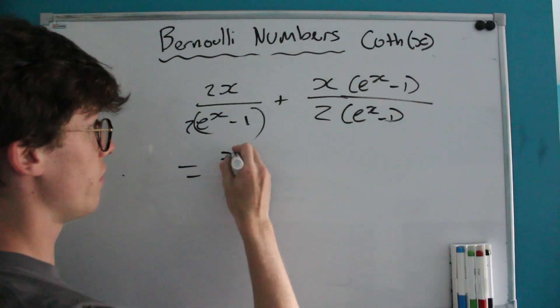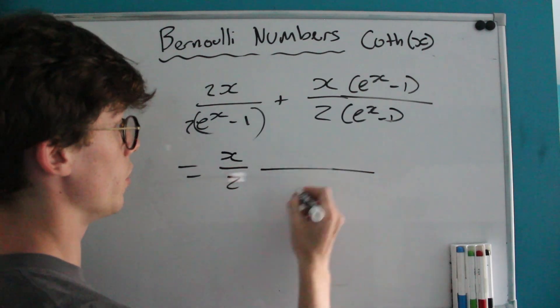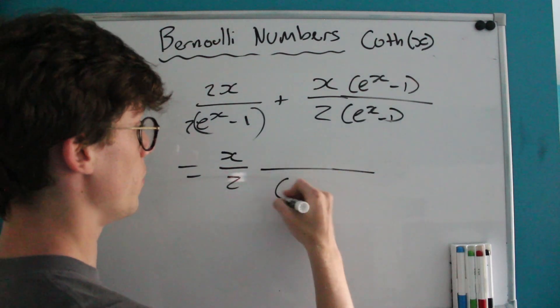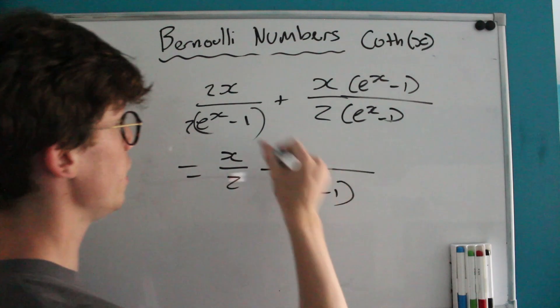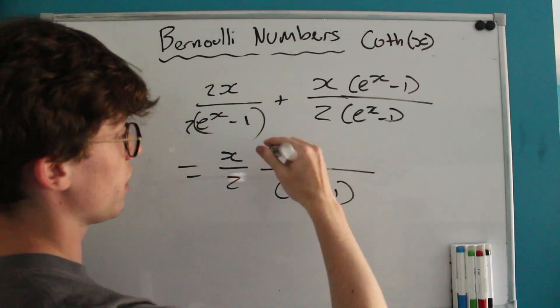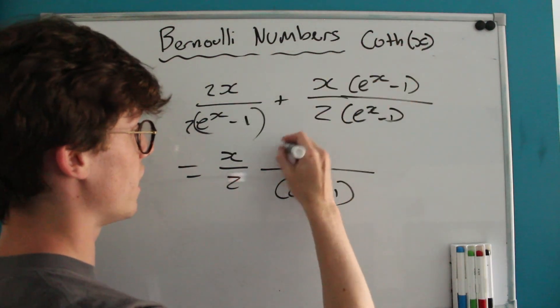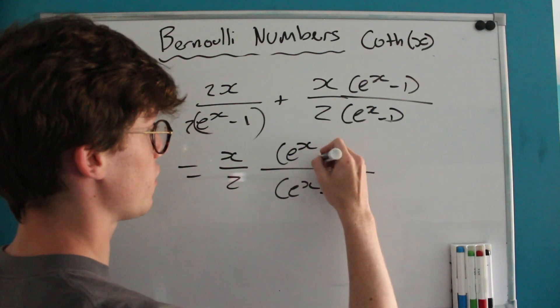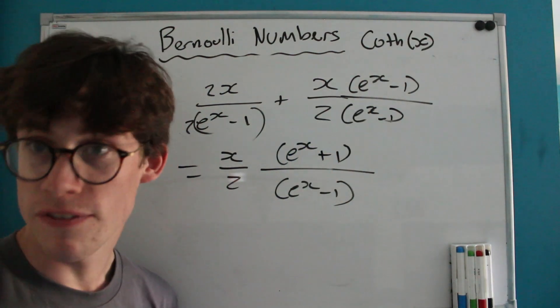That's clearly going to give us—we're going to factor out an X over 2 on both sides—we're going to have a denominator of e^X minus 1, we're going to have 2X minus X, also known as X, and we factor that X out, we're going to have e^X plus 1.